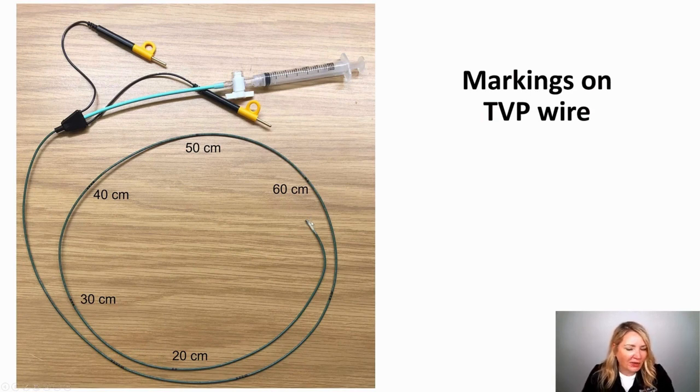If you consider the tip would be the zero mark, you can see the next mark is two dashes, that would be 20 centimeters, three dashes 30 centimeters, four dashes 40 centimeters, one big dash is 50.